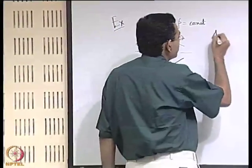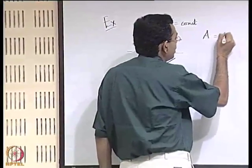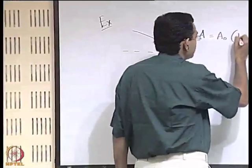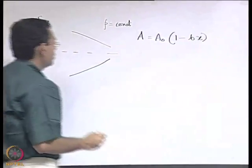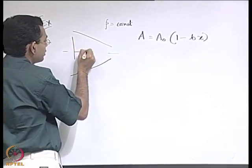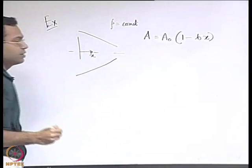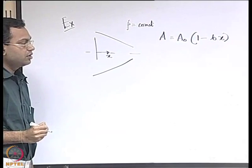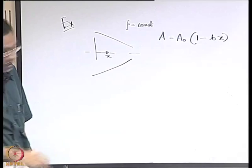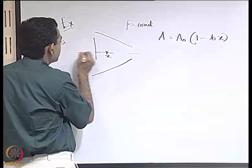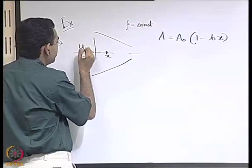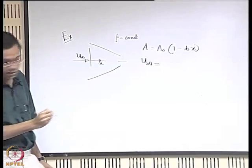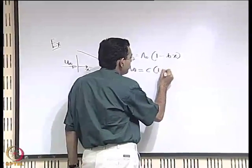The area of the cross section of the nozzle varies with the area of the cross section of the inlet in the following manner, where x is the coordinate measured from the entrance. The velocity at which the fluid enters the nozzle, u-infinity, varies with time and is of the form c times (1 + at).